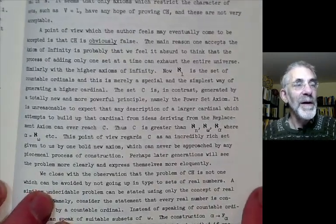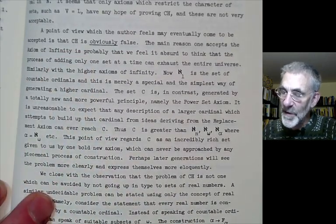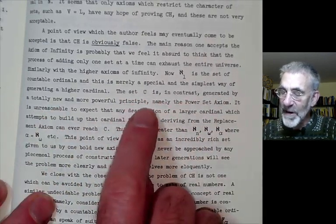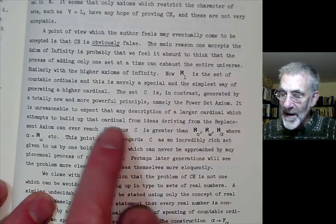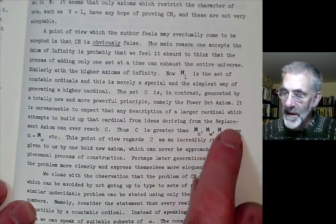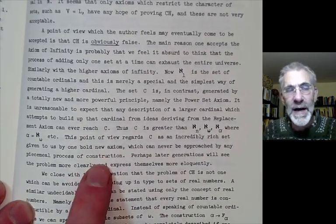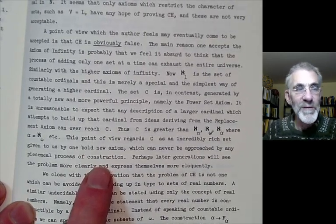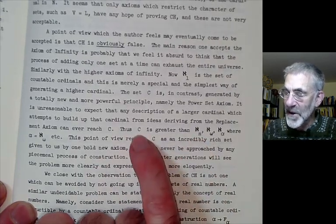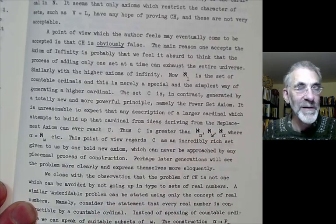So it's this paragraph here where he says it may eventually become to accept is the continuum hypothesis is obviously false and he says here that you know the set C is generated by totally new and more powerful principle namely the power set axiom and he says it's unreasonable that you can get hold of the power set of a set just by using ordinary things like replacement or the other basic axioms of set theory. So Cohen's view was the power set axiom was in some mysterious way vastly more powerful than any other principles of set formation we were able to think of. So he's saying its continuum hypothesis is not only bigger than the first uncountable cardinal but it's bigger than almost anything we can think of.